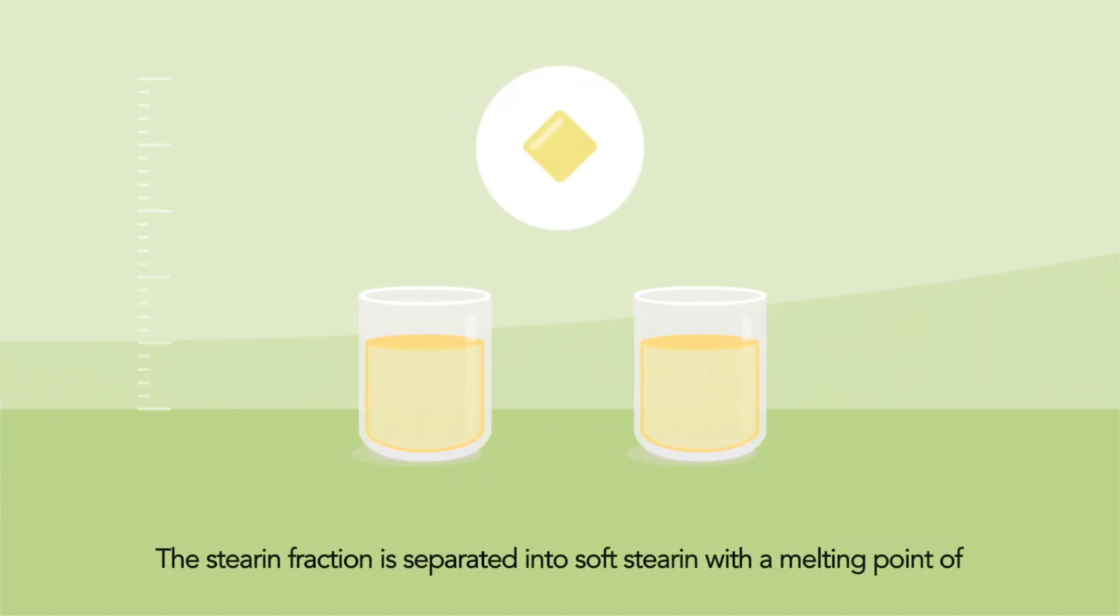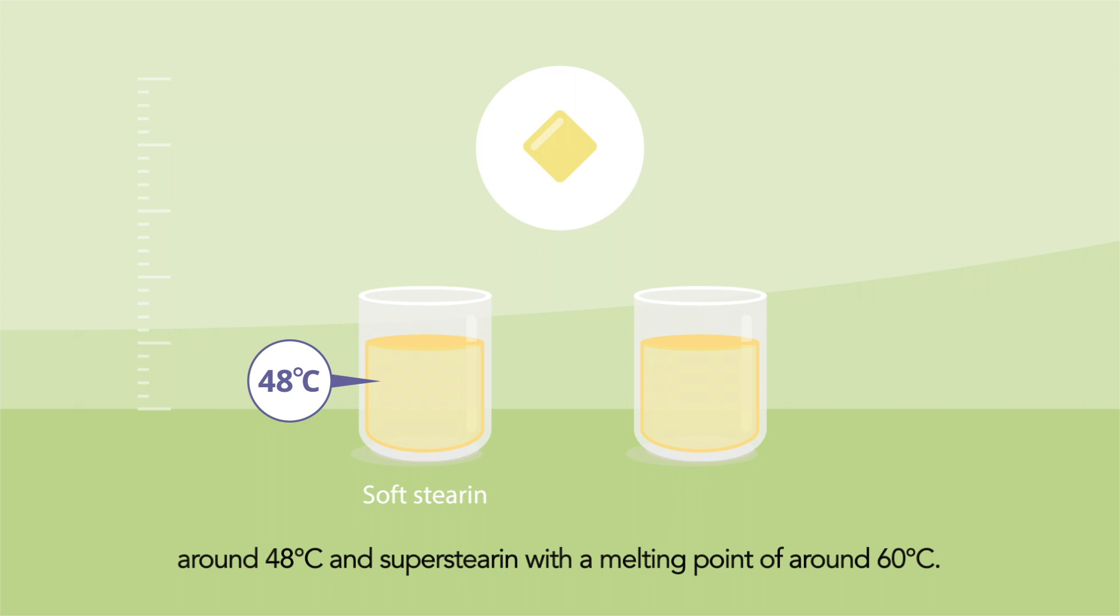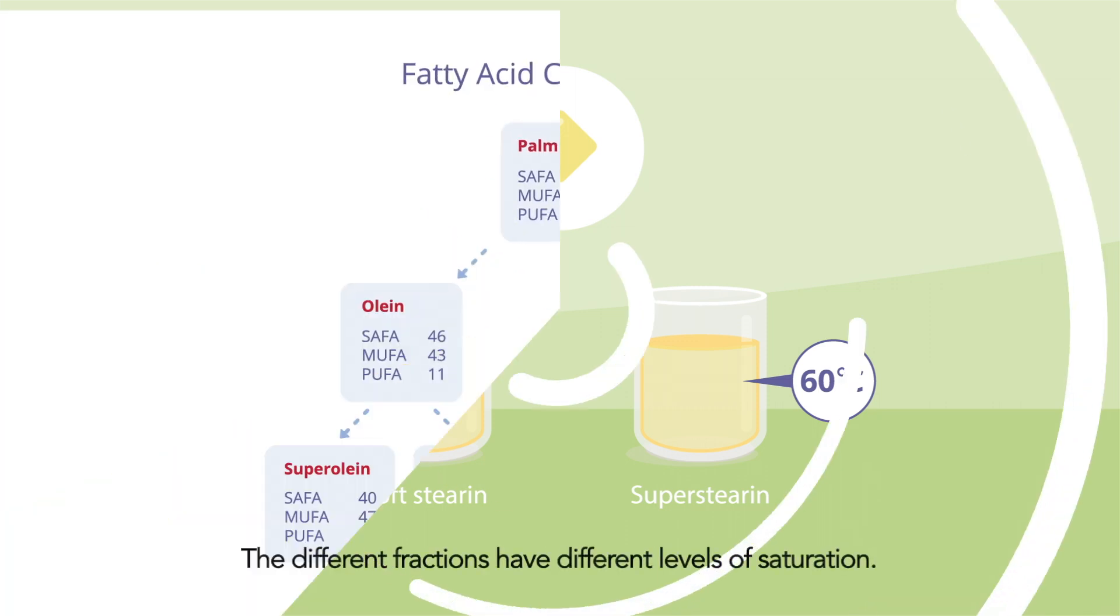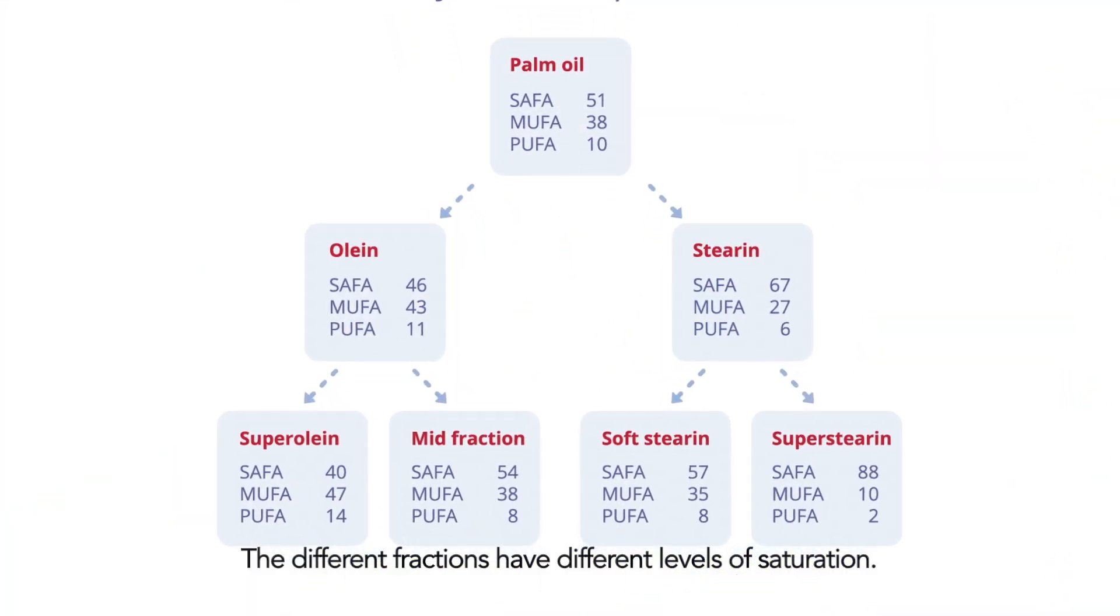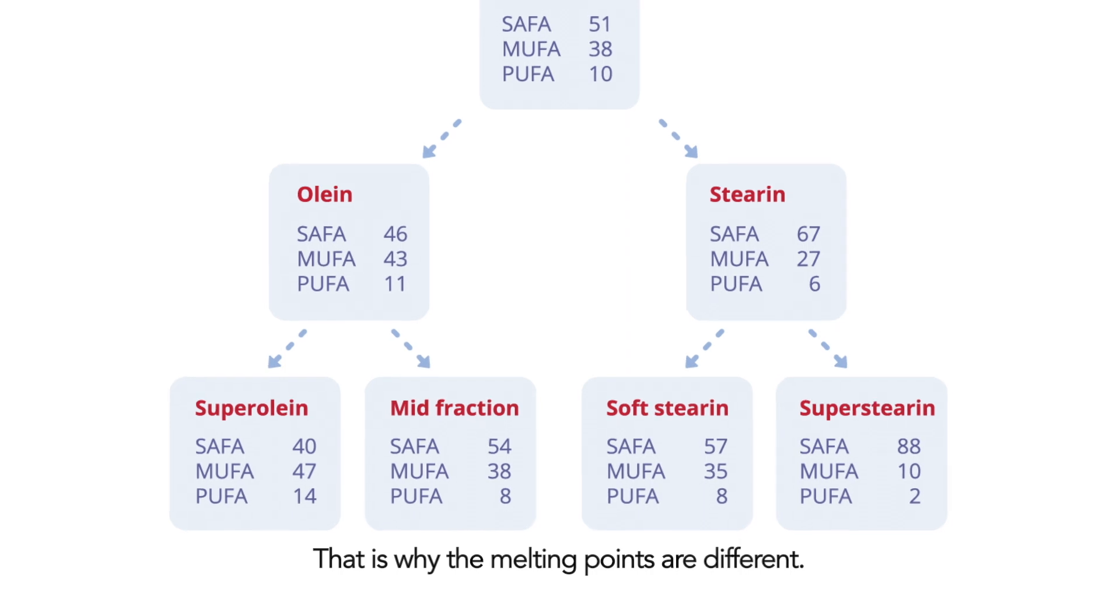The stearin fraction is separated into soft stearin with a melting point of around 48 degrees Celsius and super stearin with a melting point of around 60 degrees Celsius. The different fractions have different levels of saturation, that is why the melting points are different.